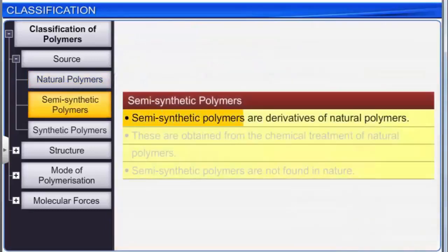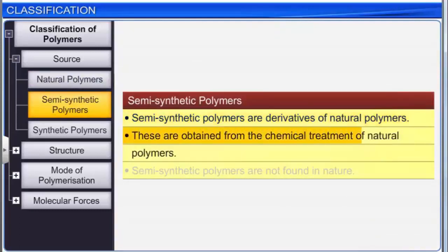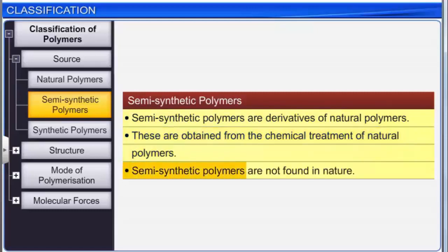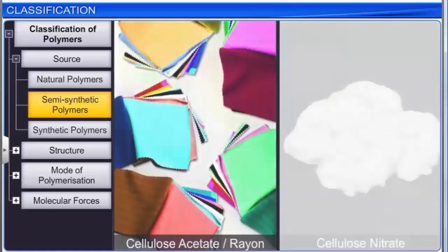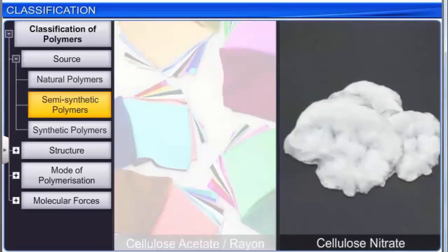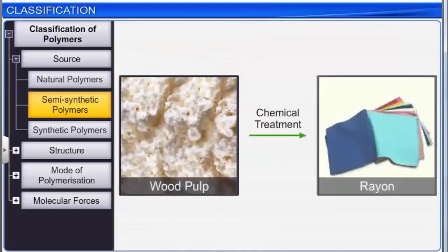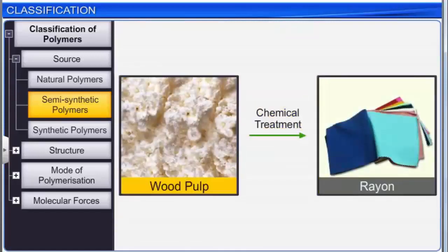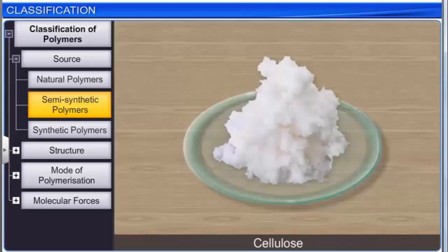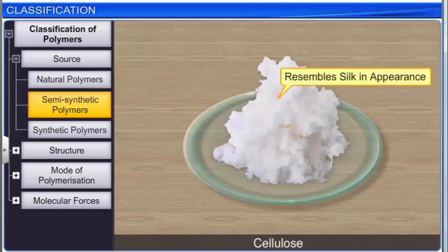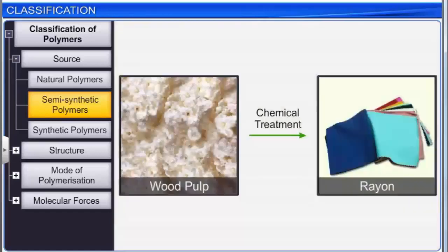Semi-synthetic polymers are derivatives of natural polymers, obtained from the chemical treatment of natural polymers. They are not found in nature. Examples are cellulose acetate, rayon, and cellulose nitrate, which is highly inflammable. Rayon is obtained by the chemical treatment of wood pulp, which contains the natural polymer cellulose, and resembles silk in appearance. Hence, it is also referred to as artificial silk.